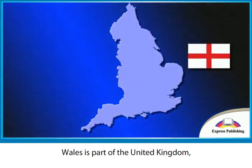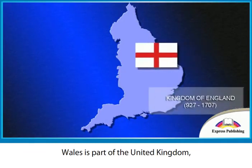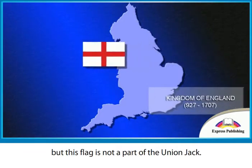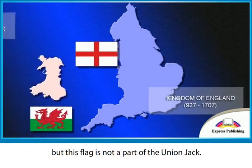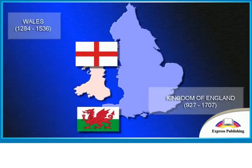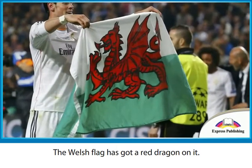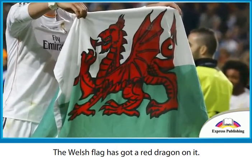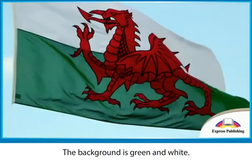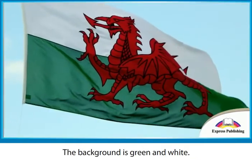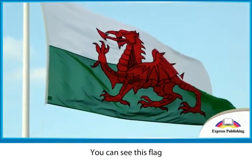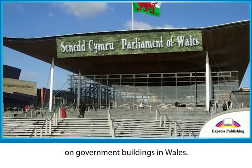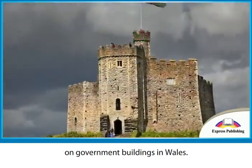Wales is part of the United Kingdom, but its flag is not part of the Union Jack. The Welsh flag has got a red dragon on it. The background is green and white. You can see this flag on government buildings in Wales.